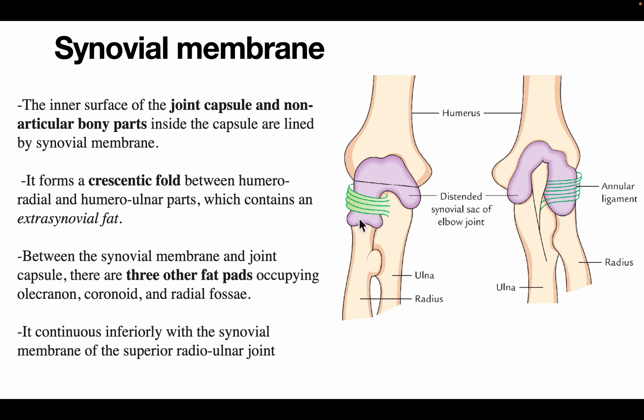The synovial membrane continues inferiorly with the synovial membrane of the superior radioulnar joint, which is formed around the head of the radius and is bounded by the annular ligament.